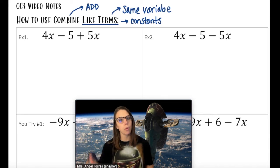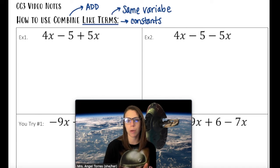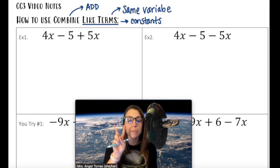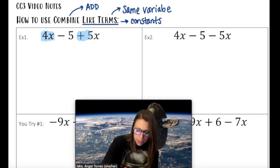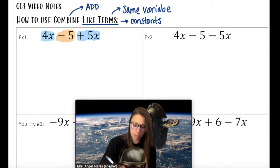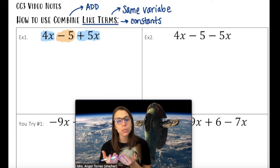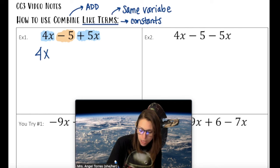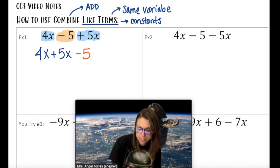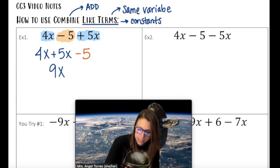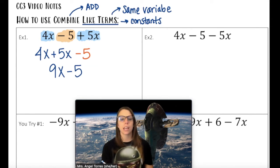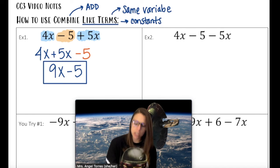Let's look at Example 1. The goal with Combining Like Terms is not the same as with Distributive Property — the goal here is to get it down to two terms maximum: one variable term and one constant. I see three terms: two variable terms, 4x and positive 5x, and one constant, negative 5. To achieve my goal, I combine those two variable terms: 4x plus 5x is 9x, and my constant stays as negative 5. I have one variable term and one constant — goal achieved.